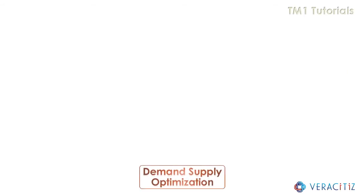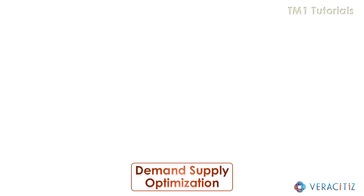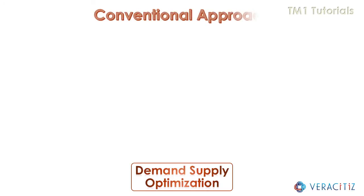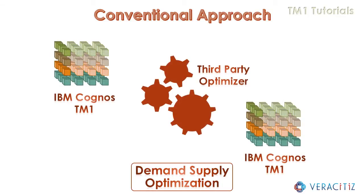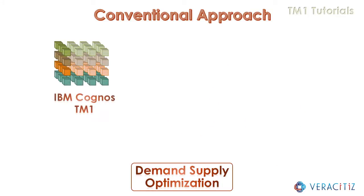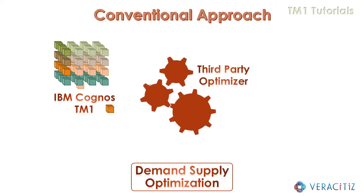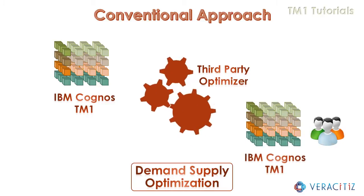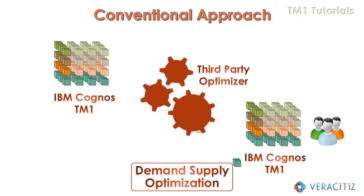All these optimization problems can only be solved by linear programming. In the conventional method, the organization followed a three-stage lengthy process which required the user to first compile the data in a TM1 model. This data would then be processed by a third-party optimizer, and eventually the optimized solution would be transferred back into the TM1 model for further analysis.